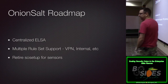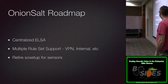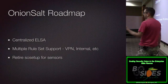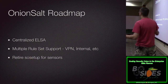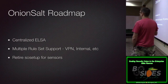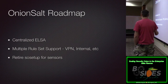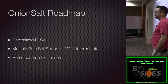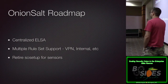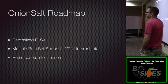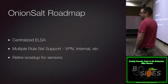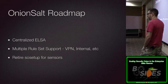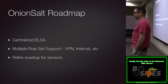What's coming up with OnionSalt: I'm going to centralize ELSA so there's no contention between PCAP and flow data. You might want to keep flow data for a year versus PCAP which you can only keep for a couple of days on the sensor. Multiple rule set support — different directories for different sensor types, and you can assign sensors to different rule groups. And I want to retire SO Setup for sensors so that OnionSalt does everything — you just fill out the file and it makes it happen.